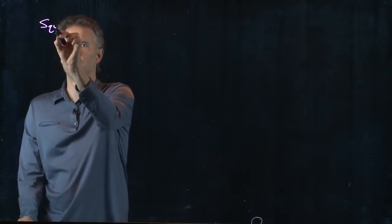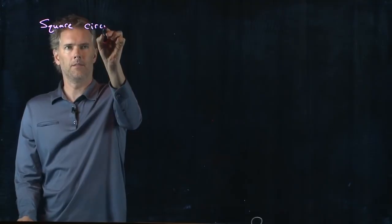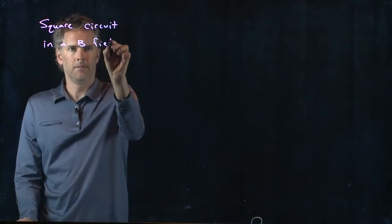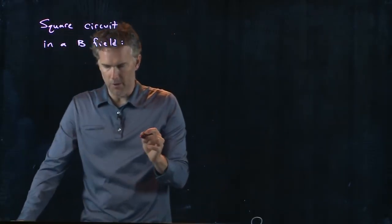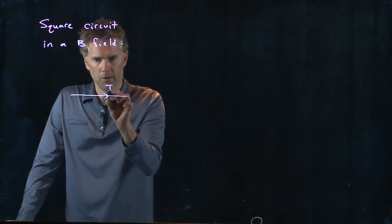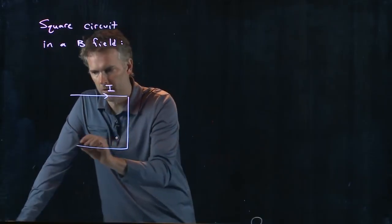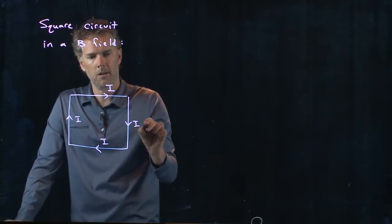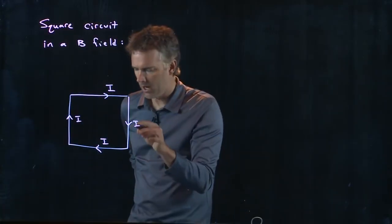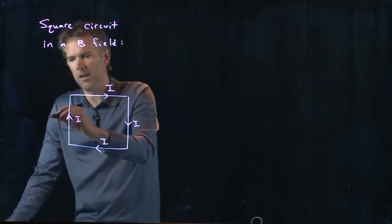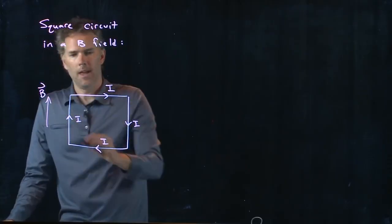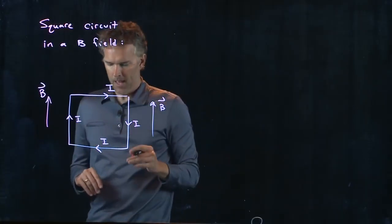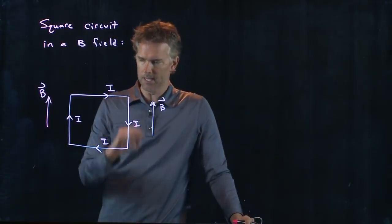We're going to do a square circuit in a B field. Let's draw that picture again with current I going around everywhere in this square wire carrying current I. Now let's put it in a B field and we're going to say that B is up everywhere. We have some B field pointing up everywhere. Now let's see if we can calculate the forces on each side.